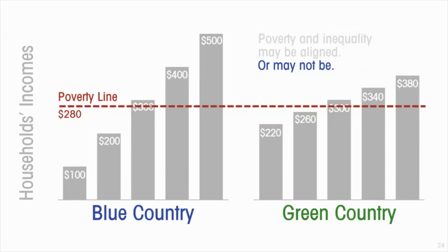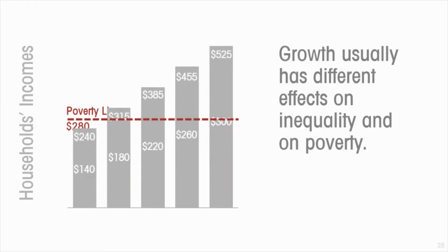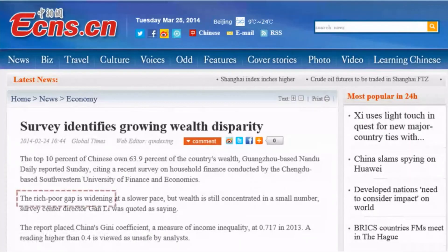This divergence between poverty and inequality is even more stark in a growing economy, because growth usually has different effects on inequality and poverty. If growth is evenly spread in its impact on the income distribution, then economic growth invariably reduces poverty as all households become richer and more rise above the poverty line. But that doesn't do anything for inequality — if growth is evenly spread, inequality stays the same as poverty declines.